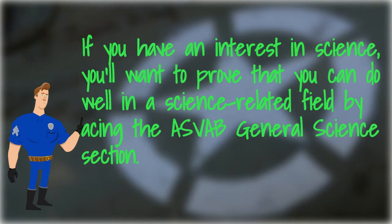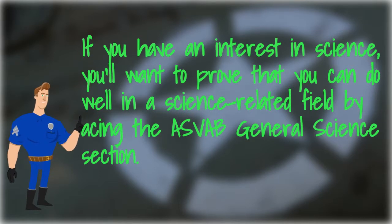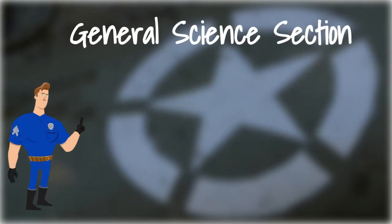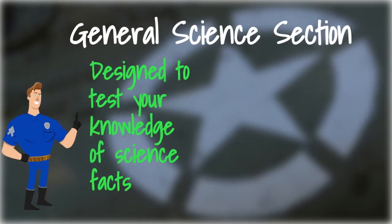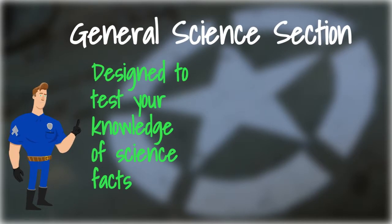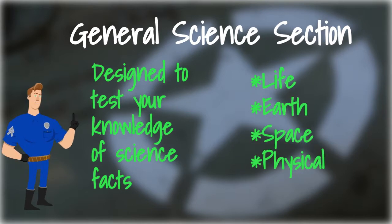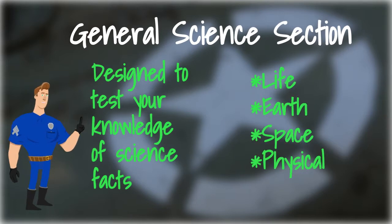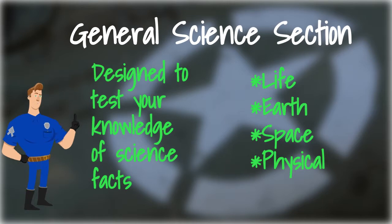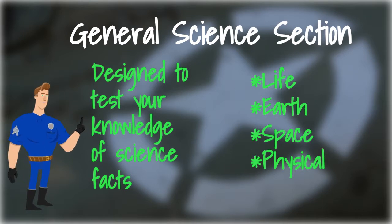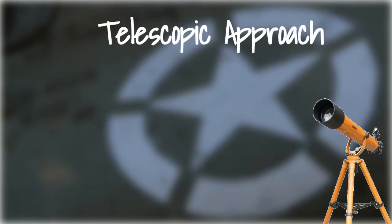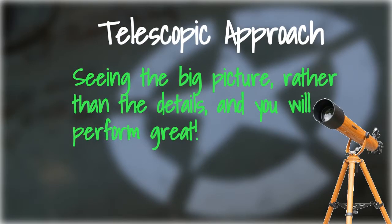For instance, if you have an interest in science, you'll want to prove that you can do well in a science-related field by acing the ASFAB General Science section. The science section of the ASFAB test is composed of questions designed to test your knowledge of science facts in the areas of life, earth, space, and physical sciences. As you can see, the scope of this test is huge, so you don't have to focus too heavily on one area, but have a basic understanding of each of them. Think of a telescopic approach for this test — seeing the big picture rather than the details — and you will perform great.